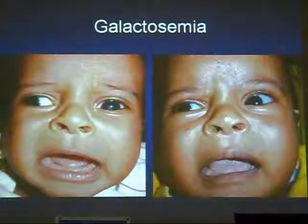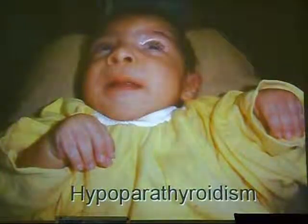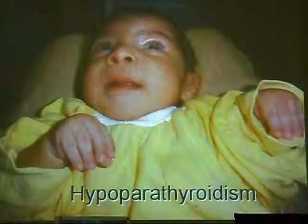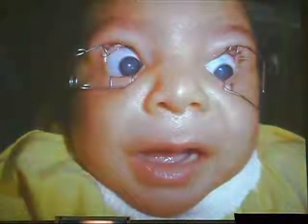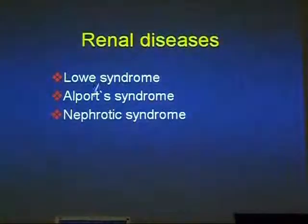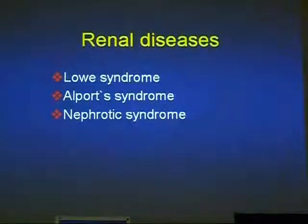Hypocalcemia usually presents with lamellar cataract, failure to thrive, and convulsions. There is carpopedal spasm due to hypocalcemia called tetany, and examination reveals bilateral congenital cataract. Renal diseases may be associated with congenital cataract — as in Lowe syndrome, Alport syndrome, or nephrotic syndrome. However, nephrotic syndrome is not directly associated with congenital cataract; cataract in nephrotic syndrome is associated with high doses of systemic steroids used in treatment.